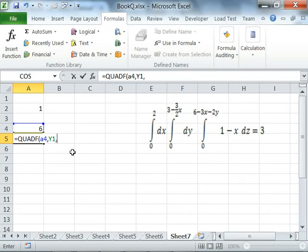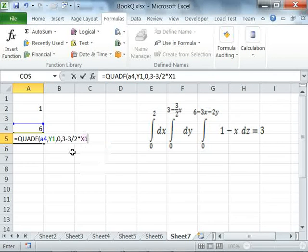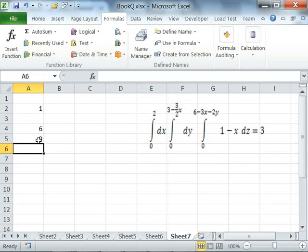My limit for the middle integral goes from 0 to, again, 3 minus 3 over 2 times x1. Again, Excel computes an intermediate value, and we can simply ignore this value.